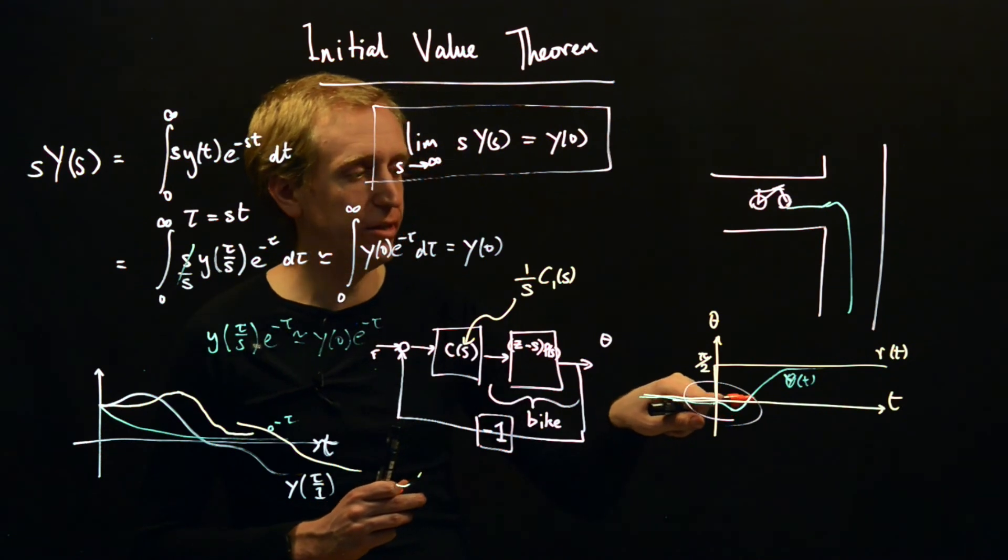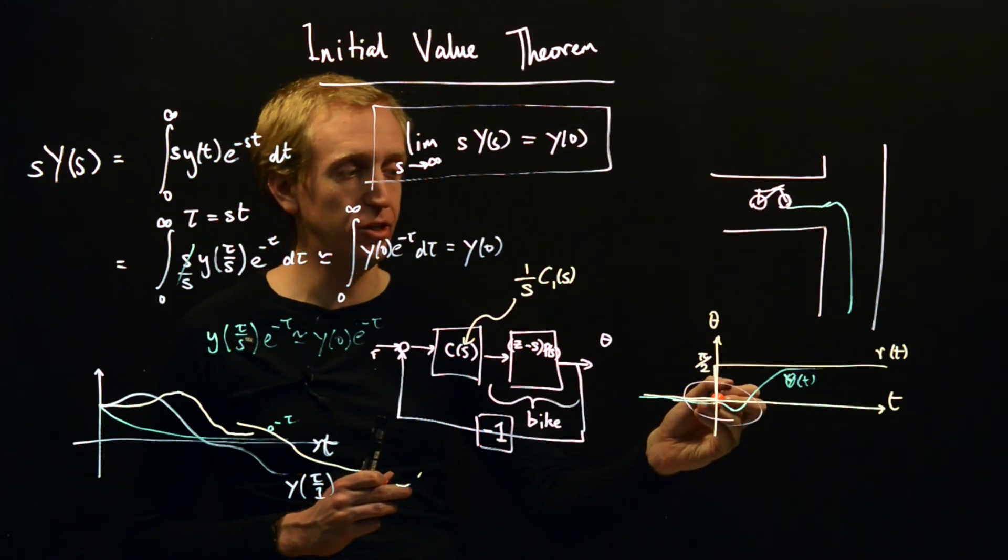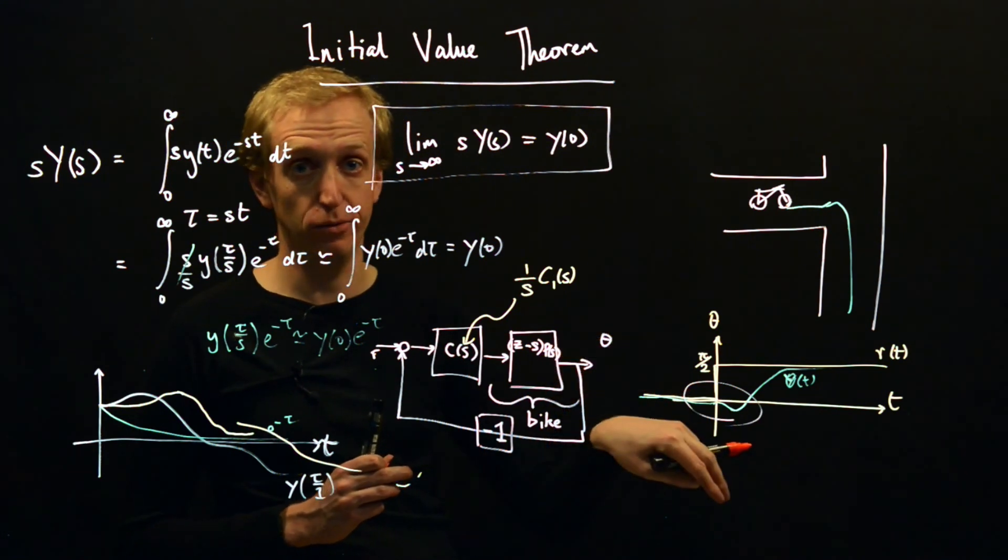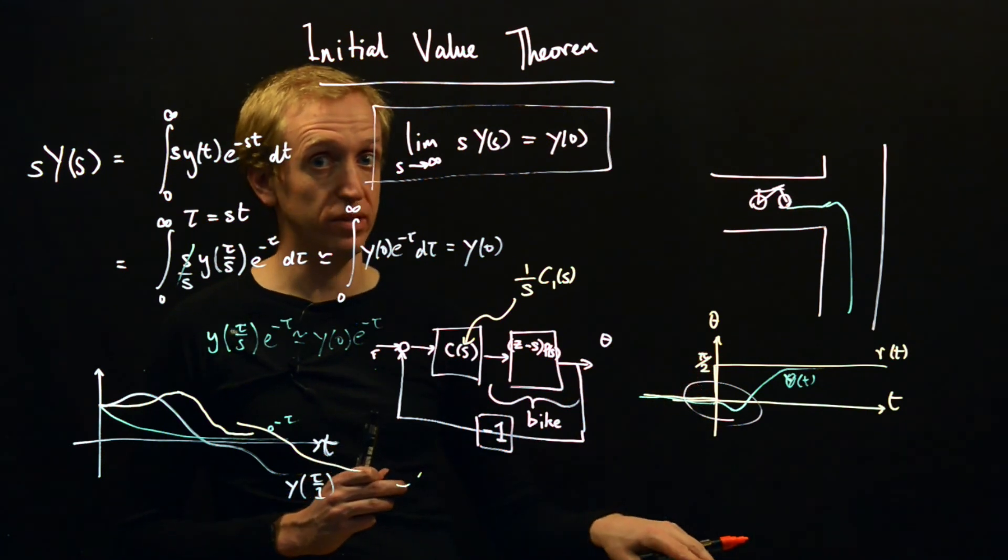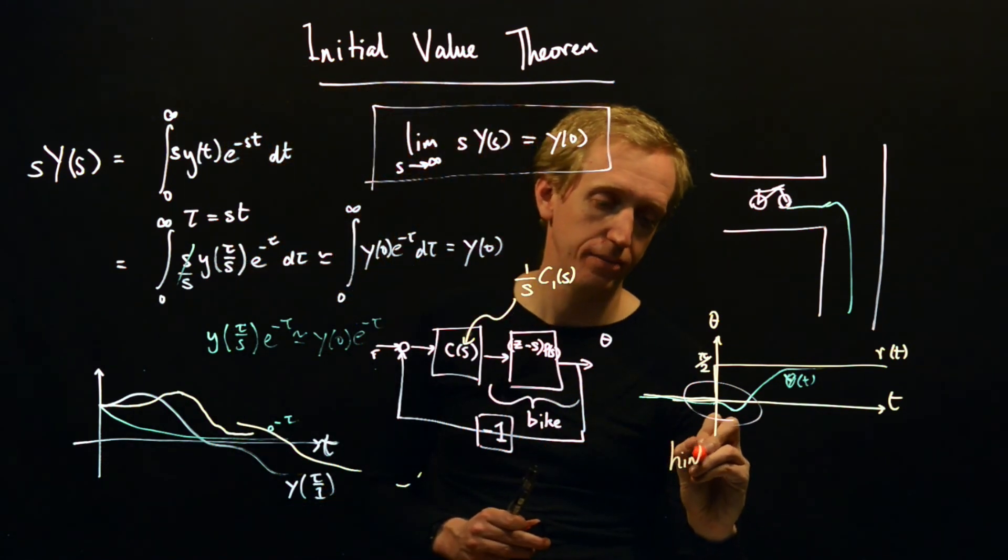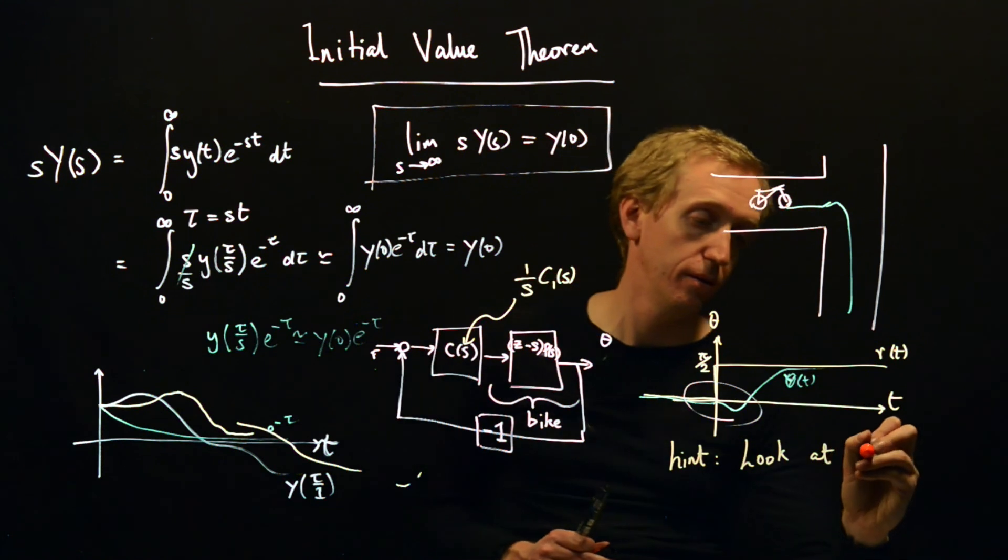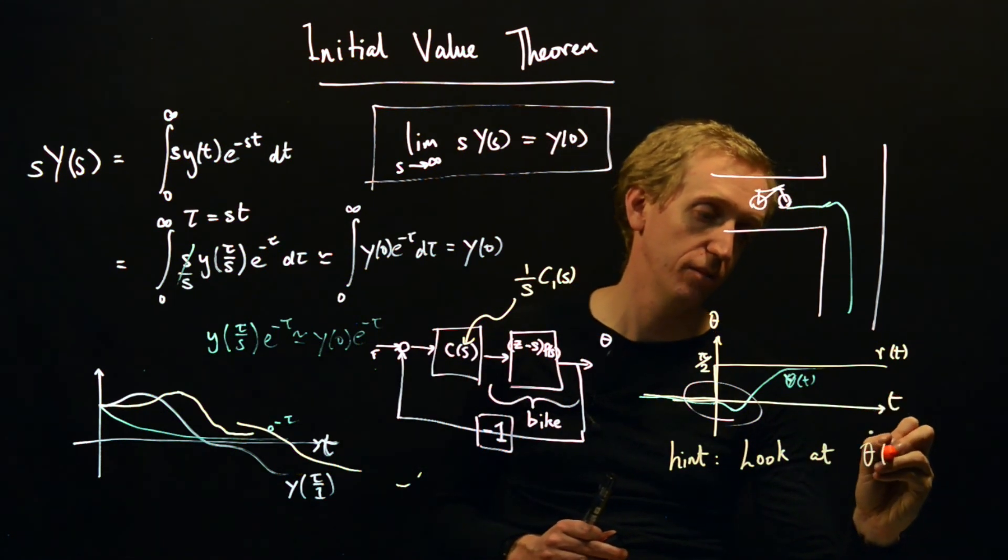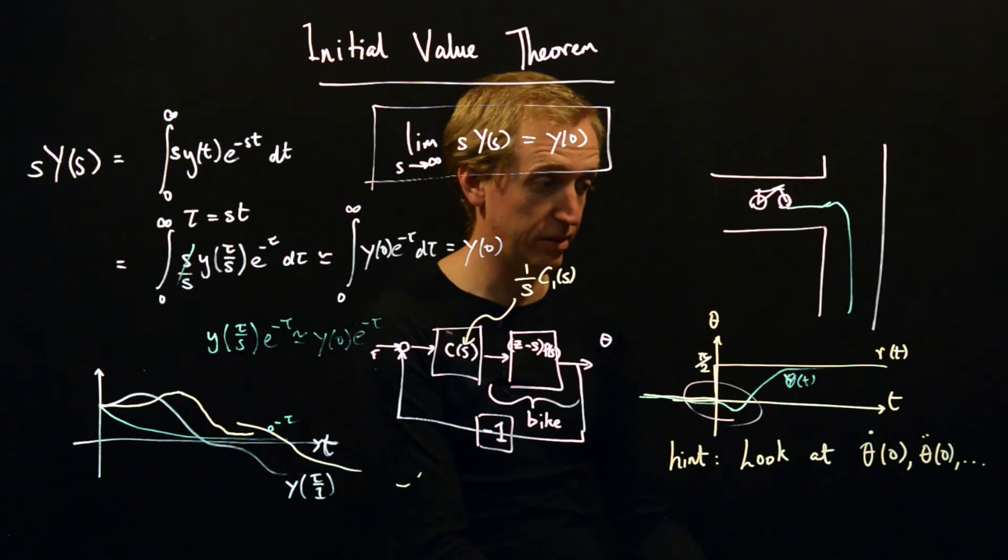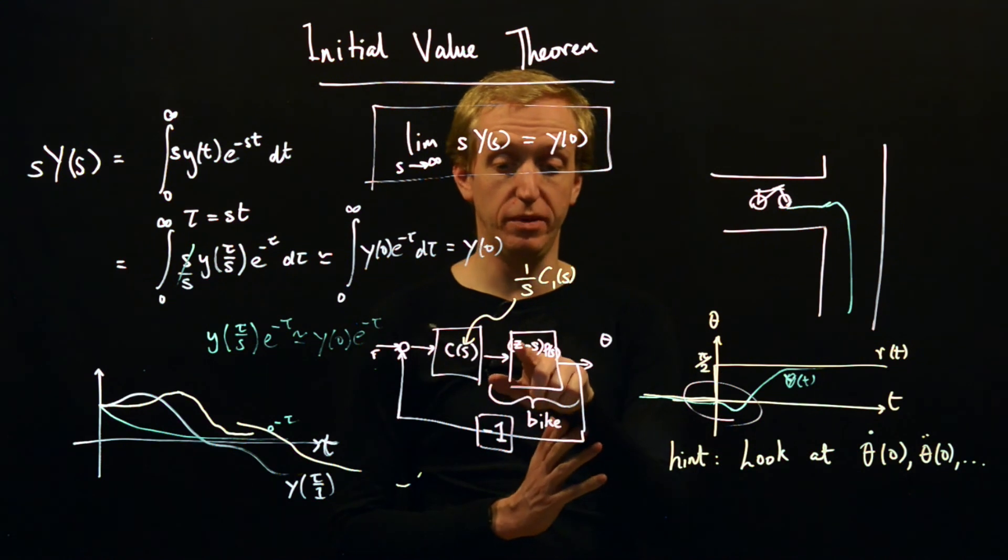And the hint here is, what characteristic of signals shows that they're going the wrong way? The initial condition here, the initial value is zero, but maybe the derivative of the initial value is pointing the wrong way, or maybe the higher order derivatives of the initial value is going the wrong way. So the hint to understanding this is look at θ̇(0), θ̈(0) and so on.